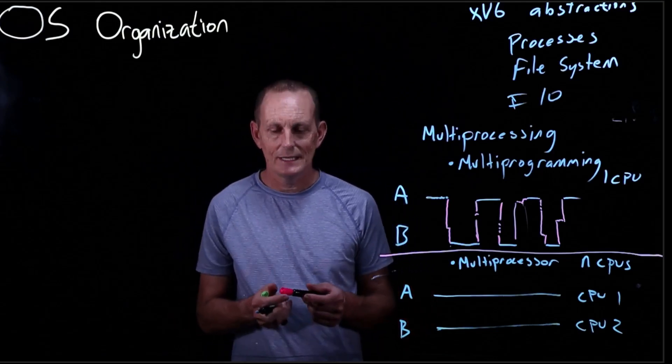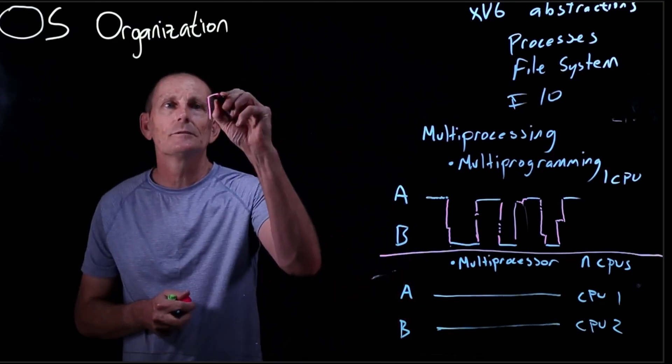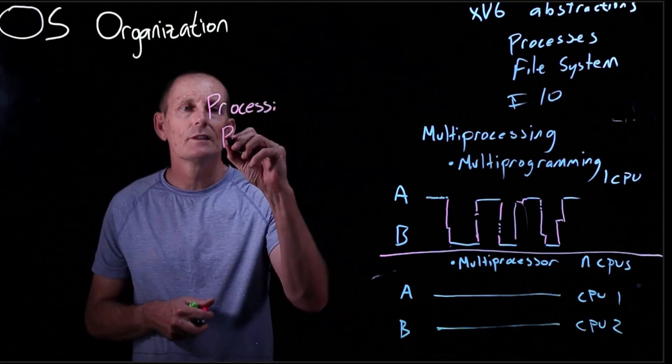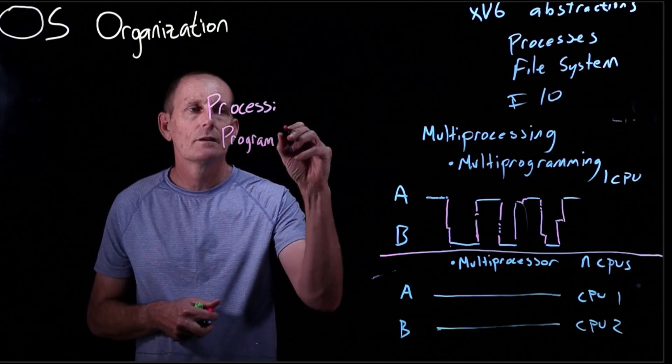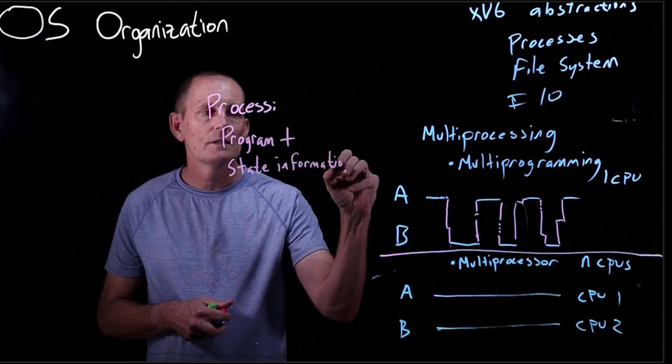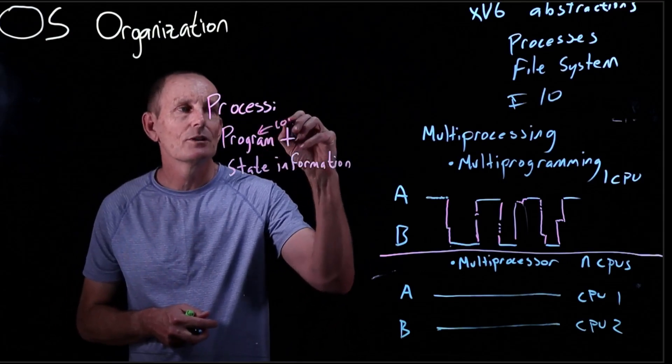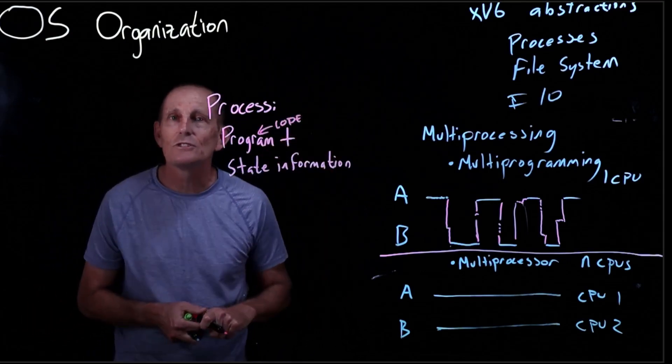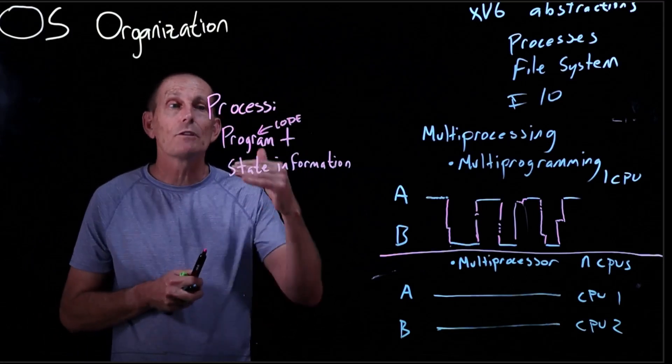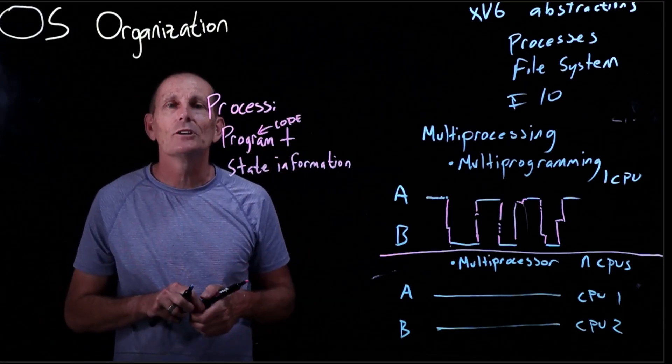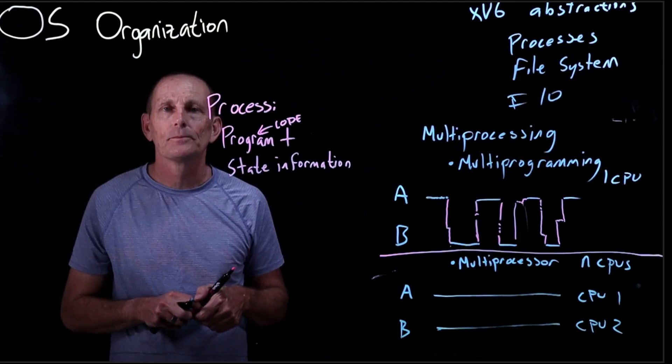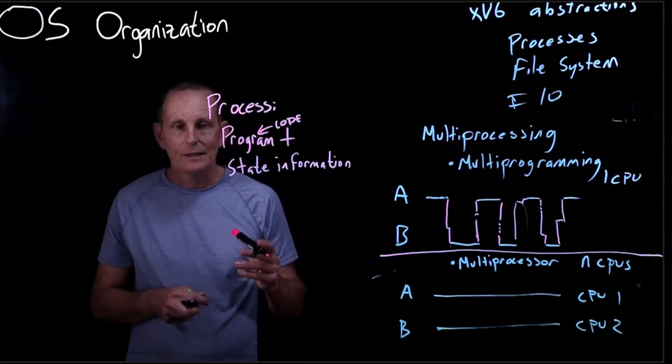We haven't talked about what actually a process is. If we look at a process, the way I think of it is it's really a program plus state information, where a program, let's say, is the code. So we have the code of the program plus we have state information. That state information is some memory that's assigned to it and what's the value of that memory, what's the value of the registers that are assigned to that process, and what is the value of some kernel data structures that are kept for that process.